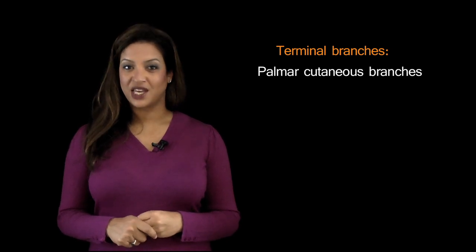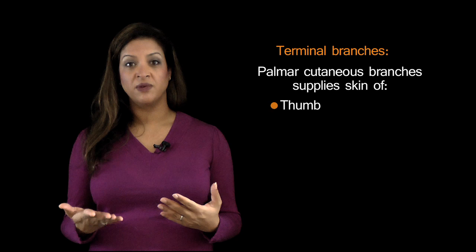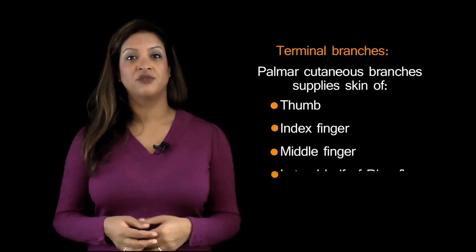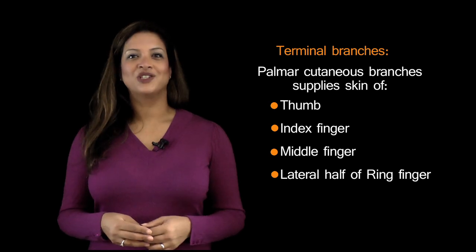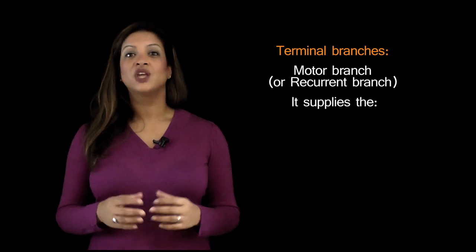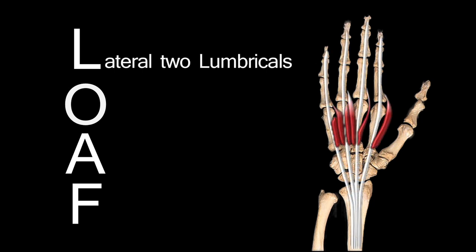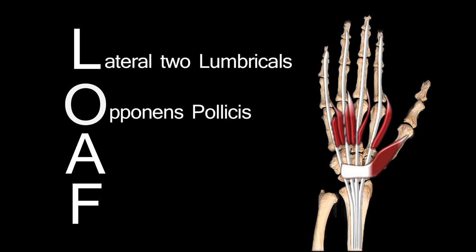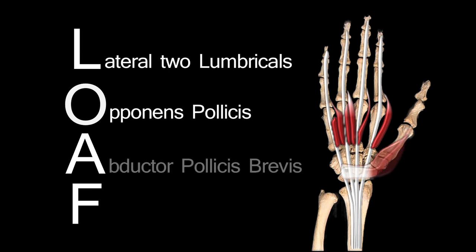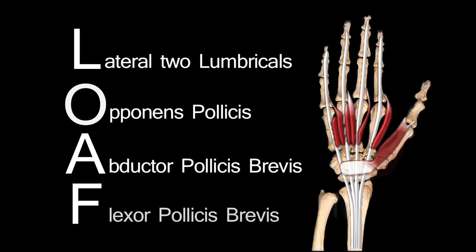The median nerve then divides into its terminal branches. It has palmar cutaneous branches supplying the skin of the thumb, the index, the middle, and the lateral half of the ring finger. The other terminal branch is the motor branch, or recurrent branch, of the median nerve, and this supplies the LOAF muscles in the hand. LOAF is a common mnemonic: L for the lateral two lumbricals, O for opponens pollicis, A for abductor pollicis brevis, and F for flexor pollicis brevis.